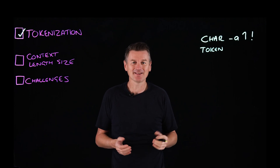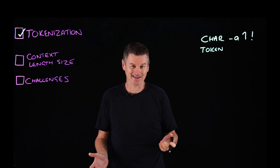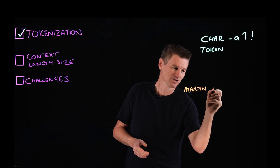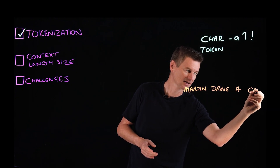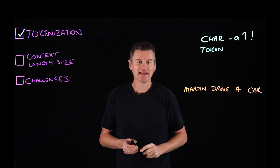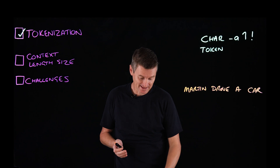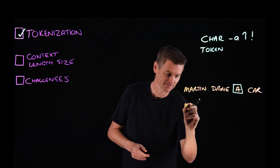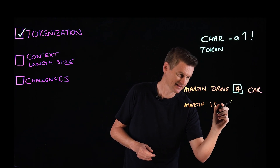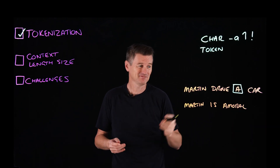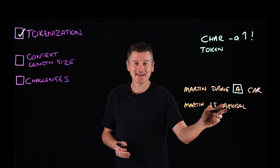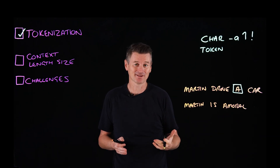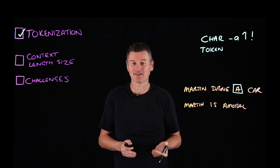For example, let's consider the different roles played by the letter A. Let's start with 'Martin drove a car.' Here, 'a' is an entire word and will be represented by a distinct token. Now what if we try a different sentence: 'Martin is amoral.' In this case, 'a' is not a word but an addition to 'moral' that significantly changes the meaning of that word. So 'amoral' would be represented by two distinct tokens.